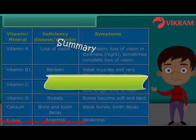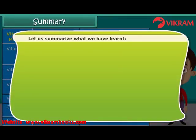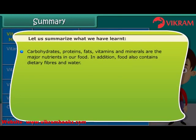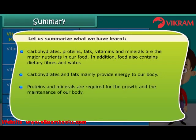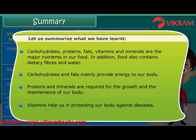Summary. Let us summarize what we have learned. Carbohydrates, proteins, fats, vitamins, and minerals are the major nutrients in our food. In addition, food also contains dietary fibers and water. Carbohydrates and fats mainly provide energy to our body. Proteins and minerals are required for the growth and the maintenance of our body. Vitamins help us in protecting our body against diseases.